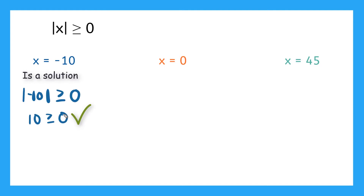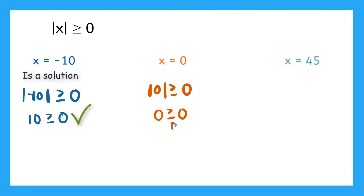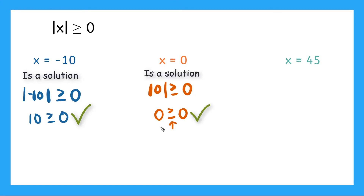Is zero a solution? Well, if we plug it in, we have the absolute value of zero is greater than or equal to zero. And if we evaluate the absolute value of zero — that's just zero. Is zero greater than or equal to zero? That equal sign tells me yes, these things can be equal. So zero is a solution to our inequality.